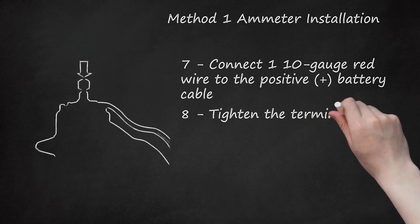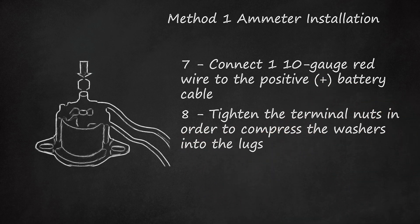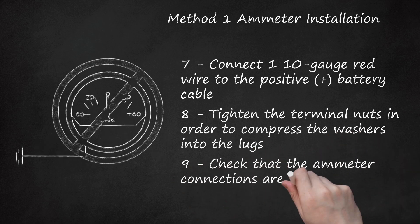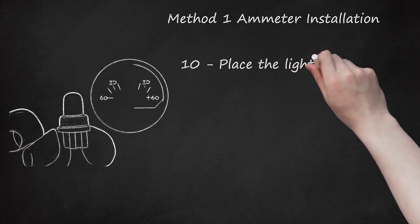Step 8: Tighten the terminal nuts in order to compress the washers into the lugs. Step 9: Check that the ammeter connections are not grounded. Step 10: Place the light into the gauge.